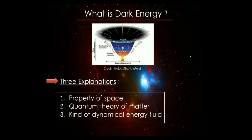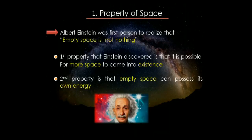There are three explanations for dark energy. The first is that dark energy is a property of space itself. Albert Einstein — a genius, no doubt — was the first person to realize that empty space is not nothing. We sometimes think that in space there is only darkness and nothing, but that is not the case. He revealed that more space can come into existence, and that empty space can possess its own energy in the form of dark energy.